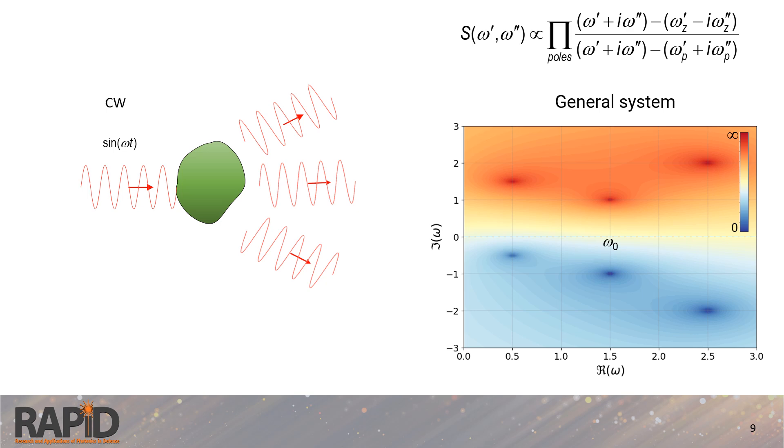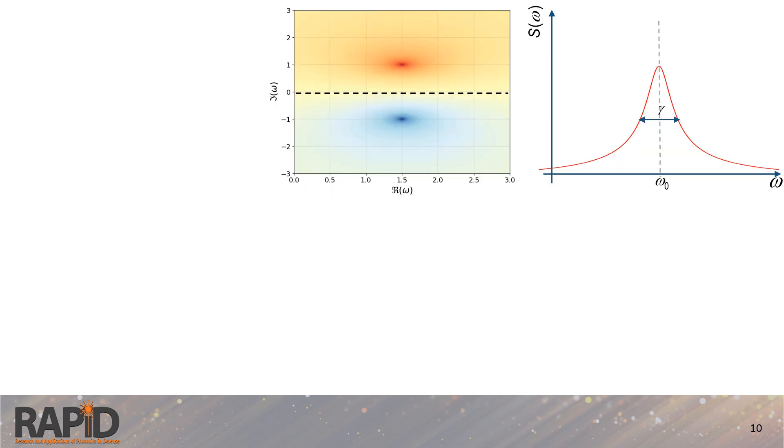For a more general system with multiple eigenmodes, the scattering response function must be expressed as a product over all the peculiar points in the complex frequency plane, according to the Weierstrass factorization theorem for meromorphic functions. We can use information about poles and zeros in the complex frequency plane for both analysis and excitation.